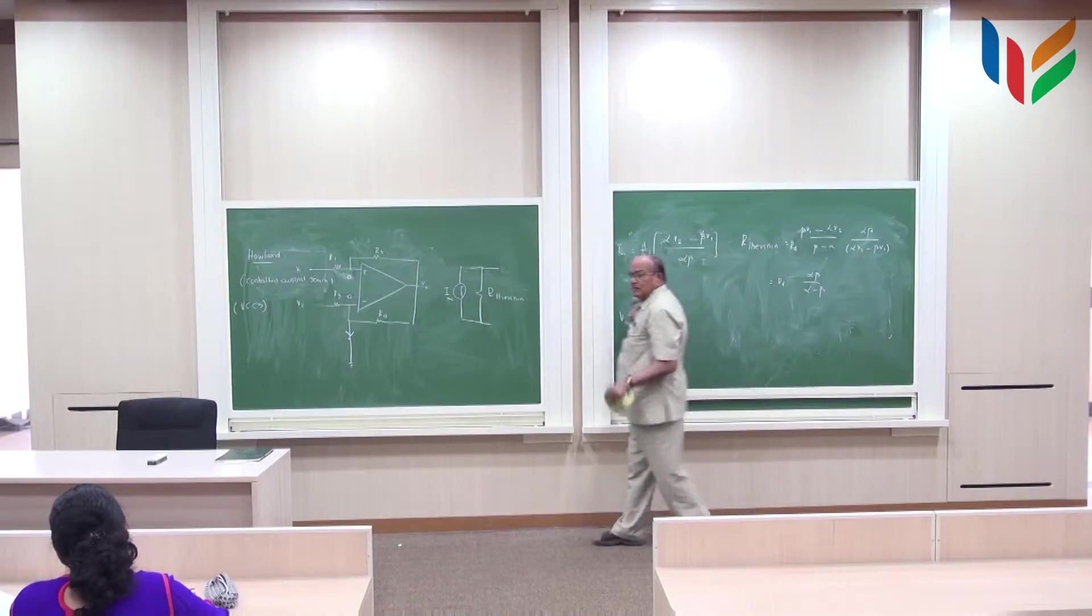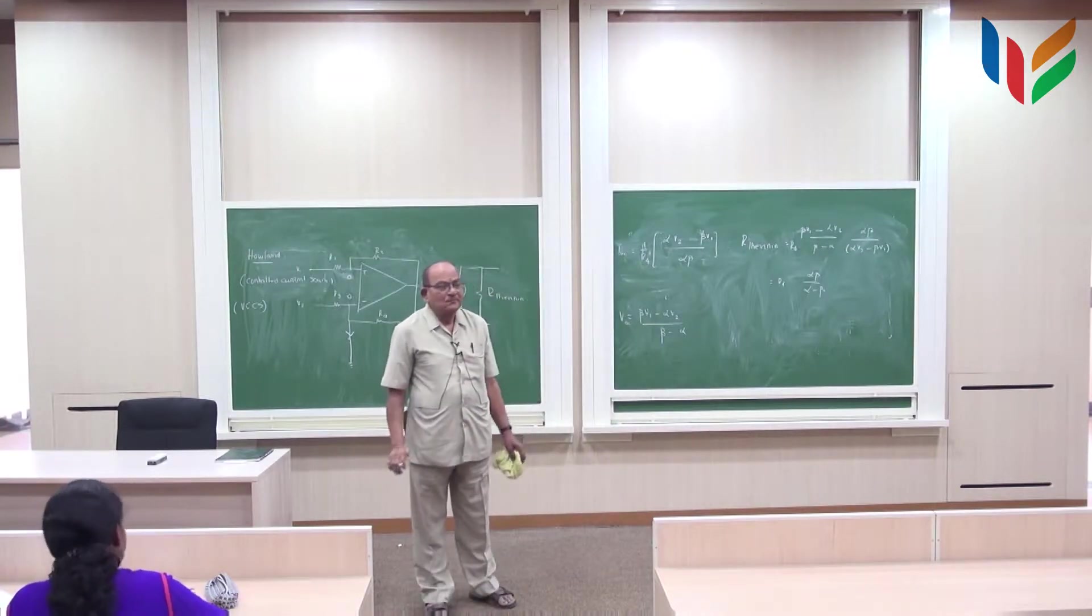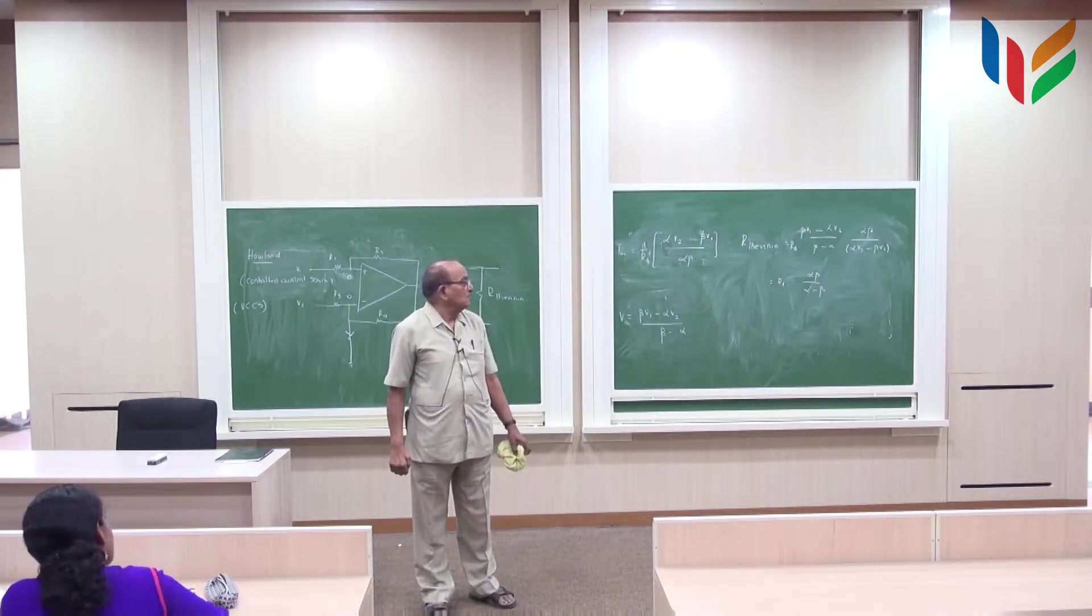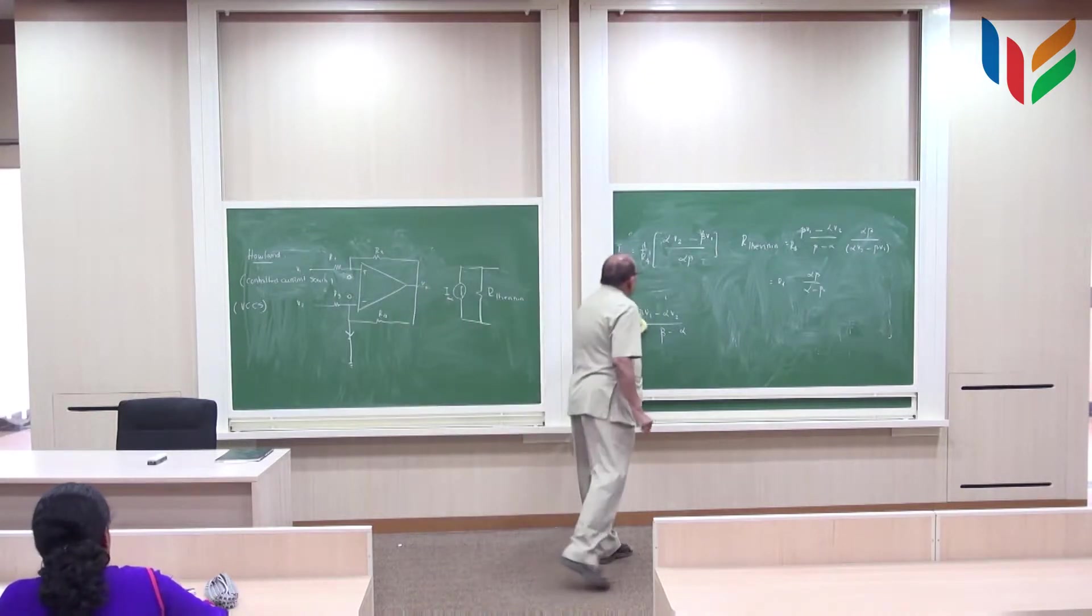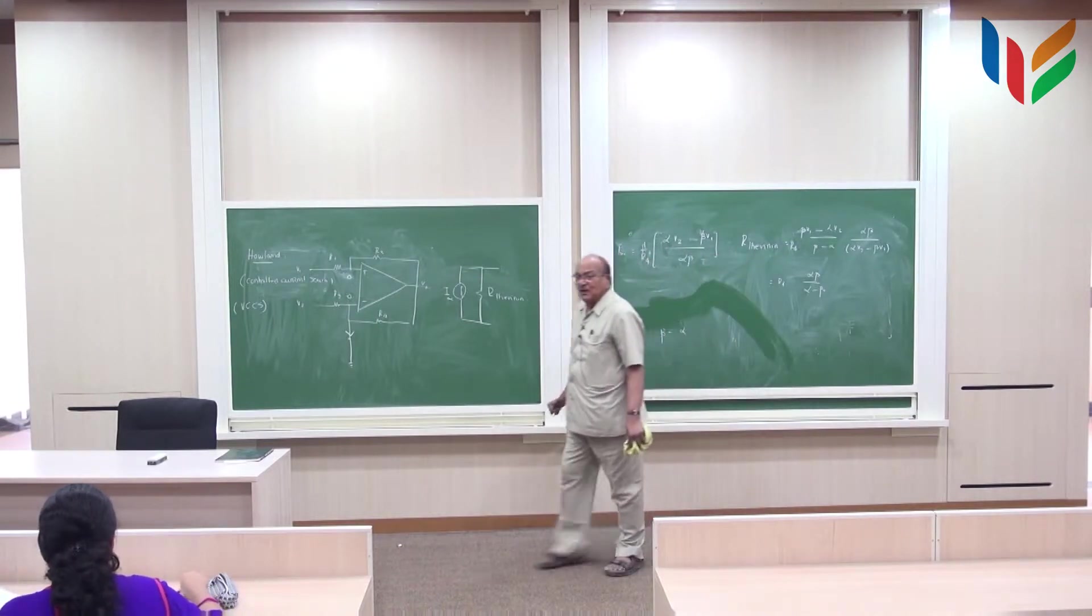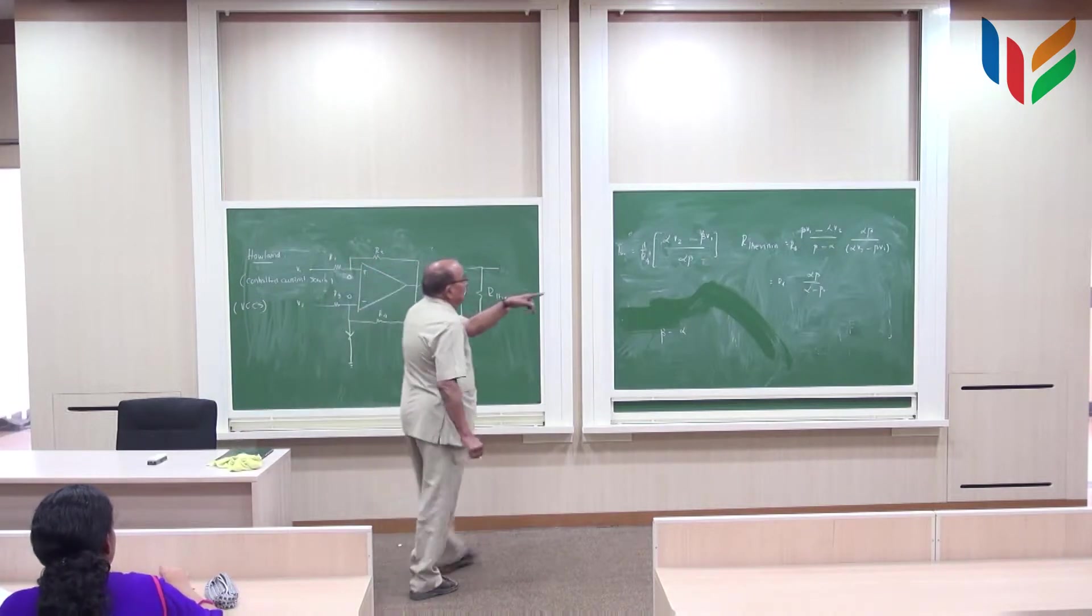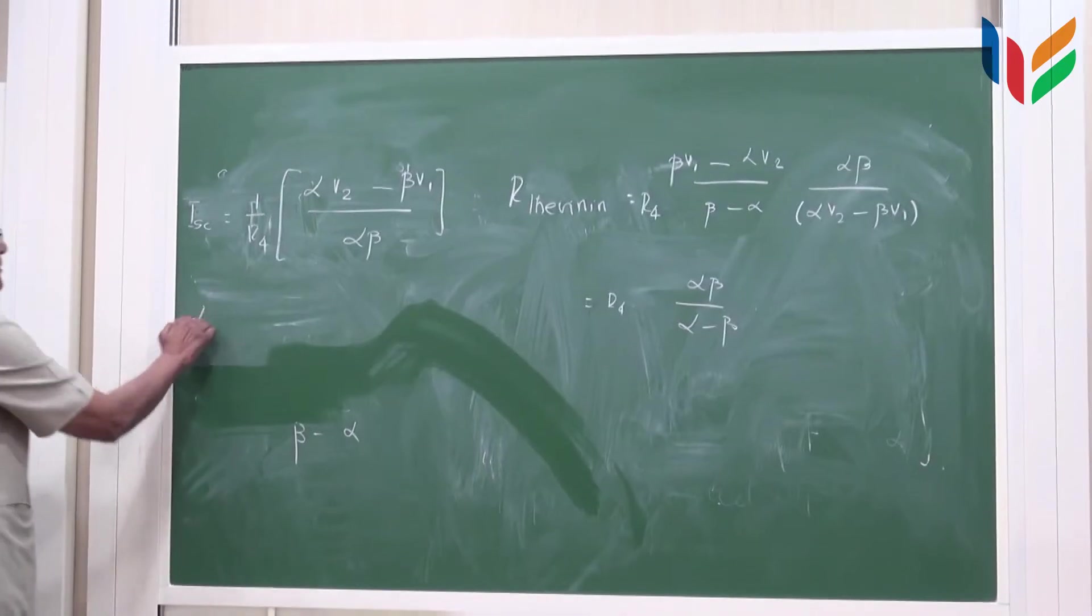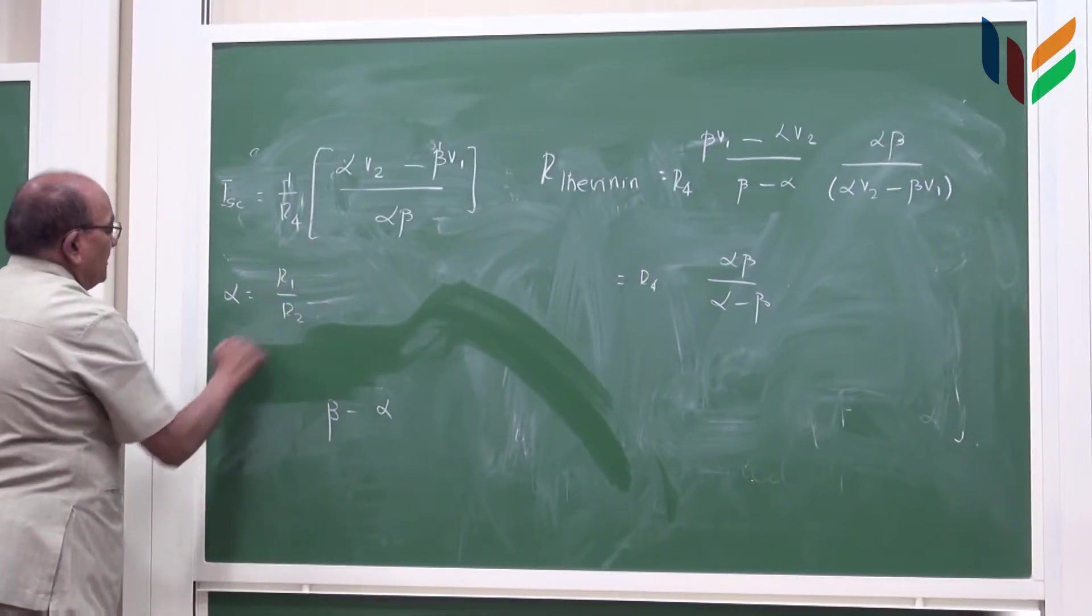Would you agree or not? No problem. Okay, this is a beautiful expression we got finally that Thevenin resistance is given by this. Remember, the ratios alpha is equal to R2 by R1 plus R2 and beta is equal to R4 by R3 plus R4.